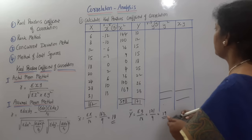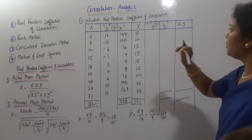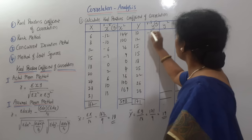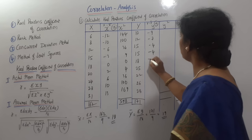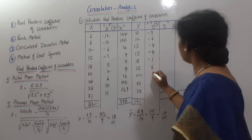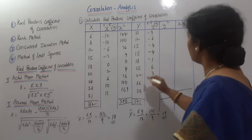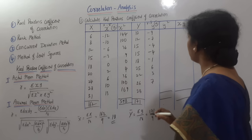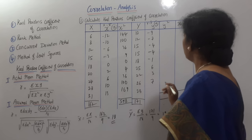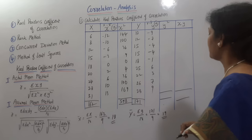In the same way, we compute small y as y minus y̅ (i.e., y minus 19): 10 minus 19 = −9, 12 minus 19 = −7, 15 minus 19 = −4, 18 minus 19 = −1, 25 minus 19 = 6, 22 minus 19 = 3, 26 minus 19 = 7, 28 minus 19 = 9.